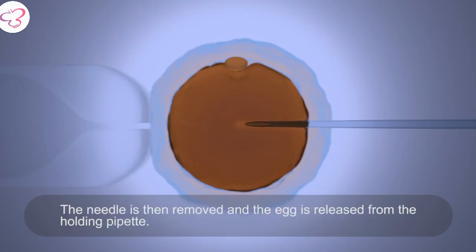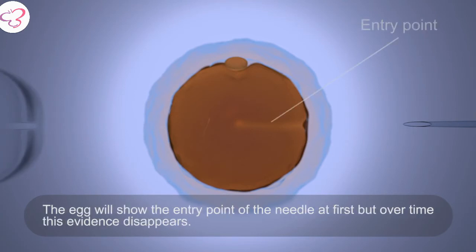The needle is then removed and the egg is released from the holding pipette. The egg will show the entry point of the needle at first, but over time this evidence disappears.